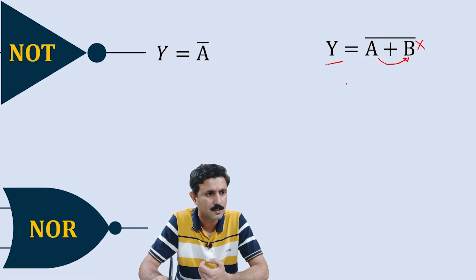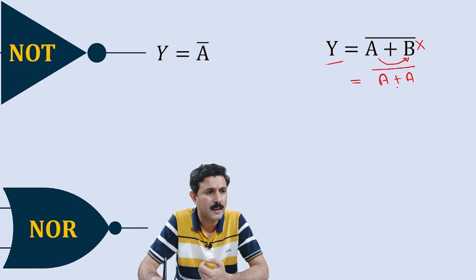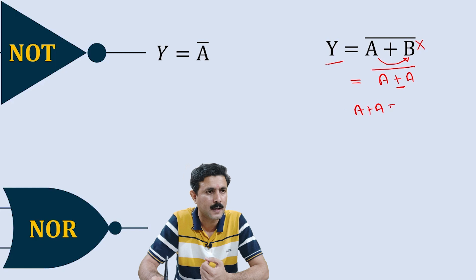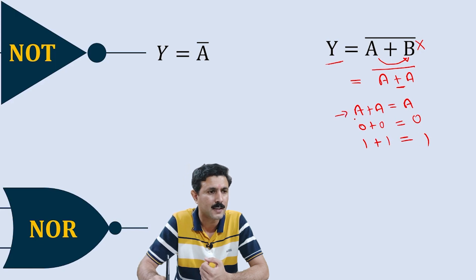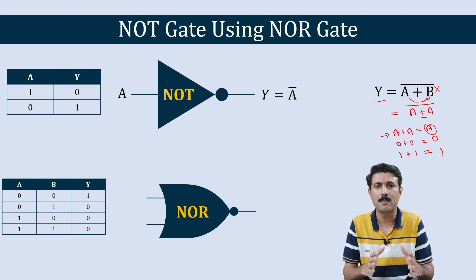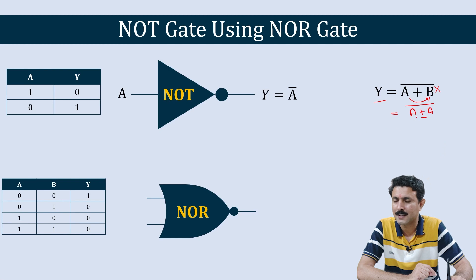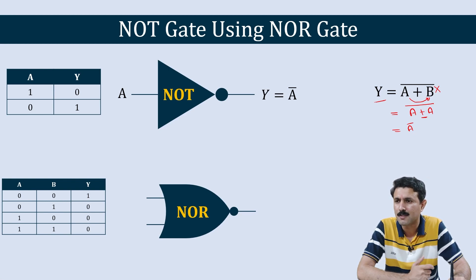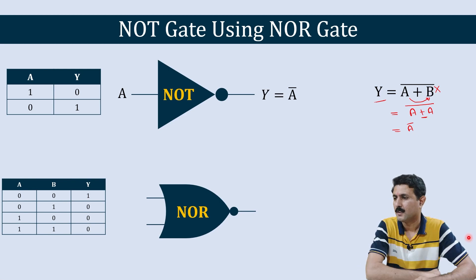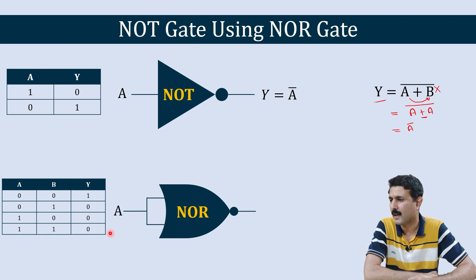Instead of A plus B, what if we remove B and add another A — so the equation can be rewritten as (A + A) bar, or A plus A complement. Since A OR A equals A — because 0 OR 0 is 0, and 1 OR 1 is 1 — we have A plus A equals A. So instead of A OR A whole bar, we write A bar. What we do is give the same input to both terminals of this NOR gate, shorting these two terminals and taking only one terminal outside, which becomes A.